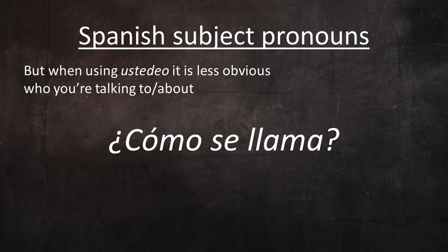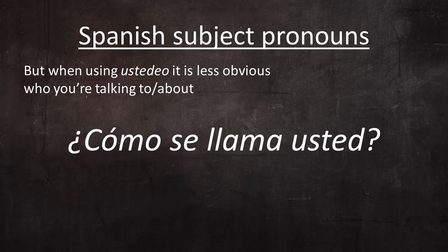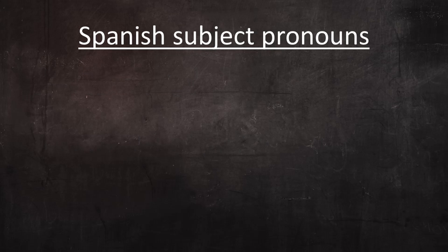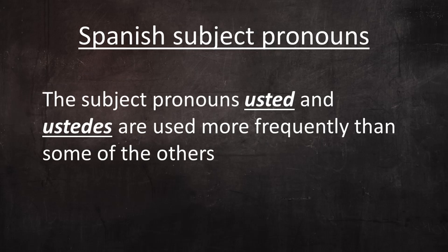For example, the question '¿cómo se llama?' could mean either 'what is his or her name' or 'what is your name.' Therefore, it's more common to use the subject pronoun usted when asking someone's name: '¿cómo se llama usted?' — and of course the same is true for the plural, ustedes. Generally speaking, the subject pronouns usted and ustedes are used more frequently than some of the others. Please understand there's a lot of variability in when subject pronouns are used and when they're omitted.